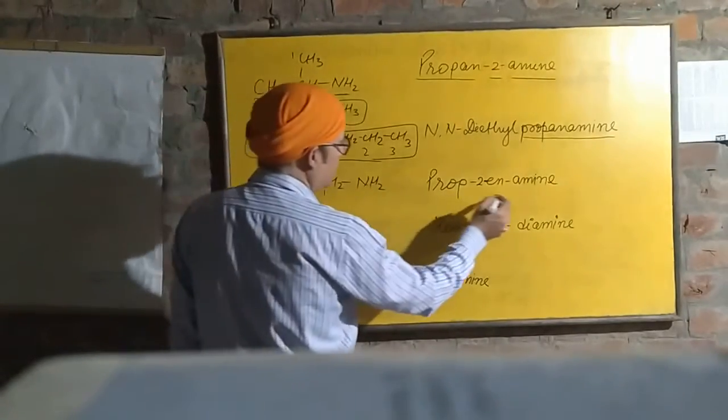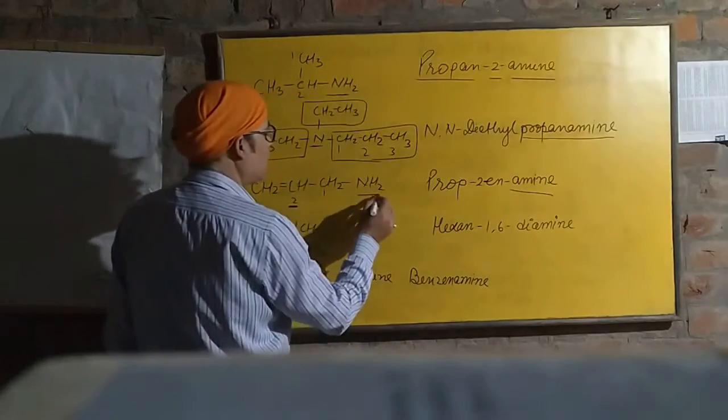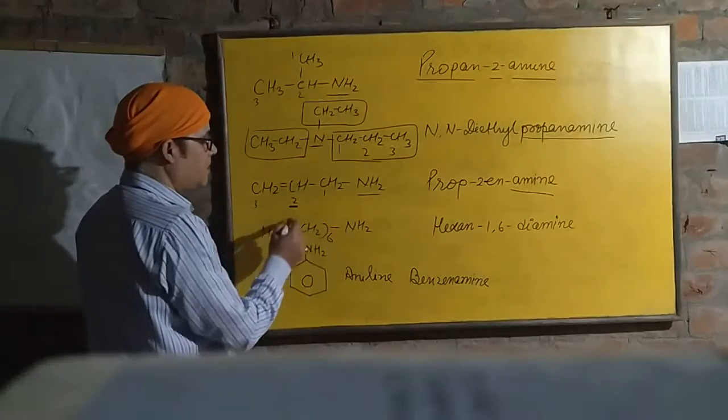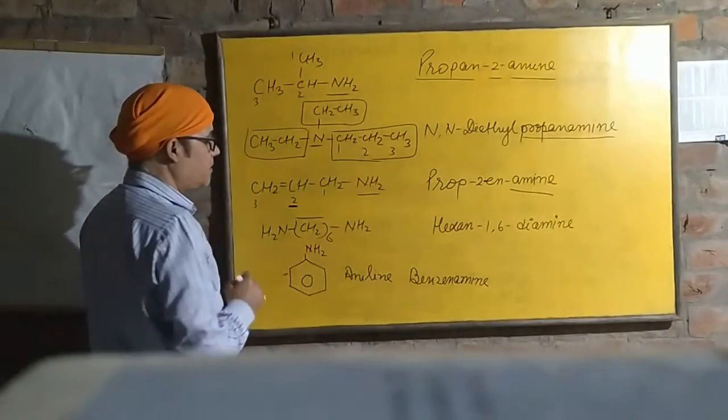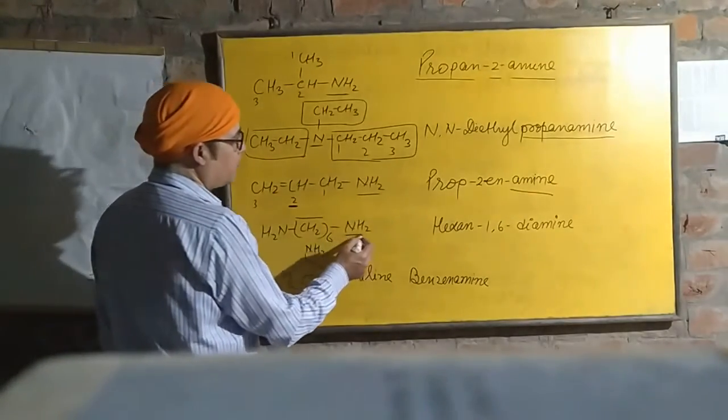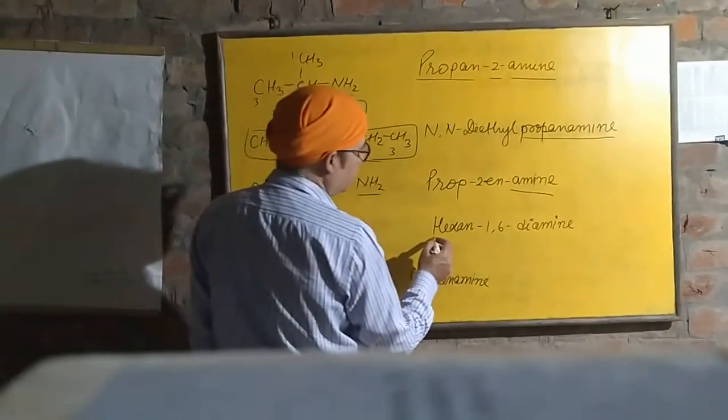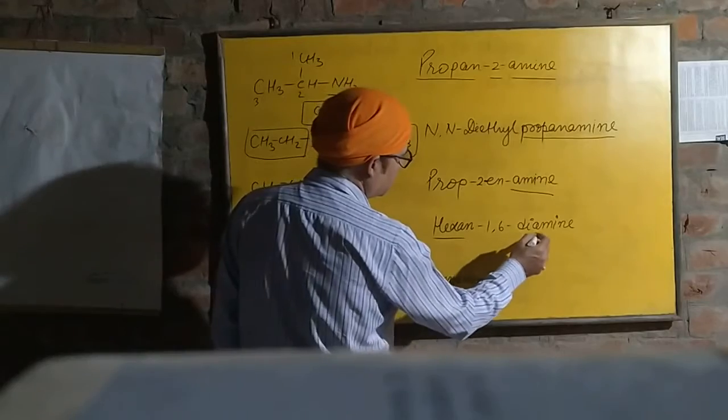At the second carbon there is a double bond, and amine on the first carbon. Next is a six carbon straight chain. At the first carbon and the last carbon there is amine. Therefore the name is hexane-1,6-diamine.